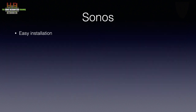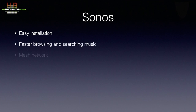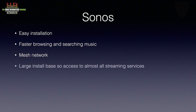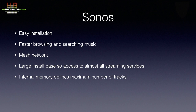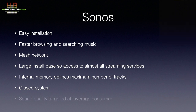To recap: installation is easy, it offers faster browsing, quick searching and uses a mesh network. Since there is a very large install base, almost any internet music streaming service loves to work with Sonos. There are limitations too: the internal memory limits the number of tracks that can be indexed — Sonos mentions a maximum of 64,000 tracks, which will be around 6,500 albums. Furthermore, it is a closed system with the advantage of operational reliability and the disadvantage of having to deal with the choices of Sonos. Last but not least, the sound quality is aimed at the average consumer, not at audiophiles.